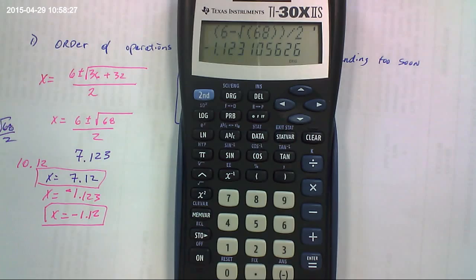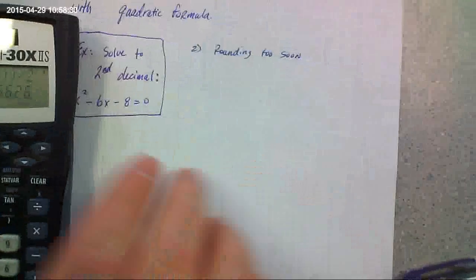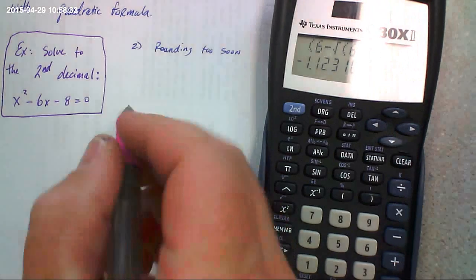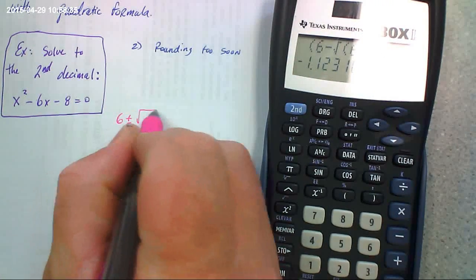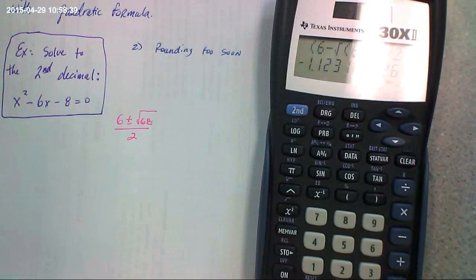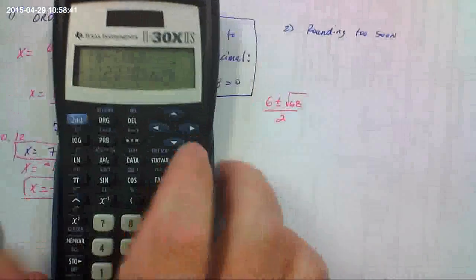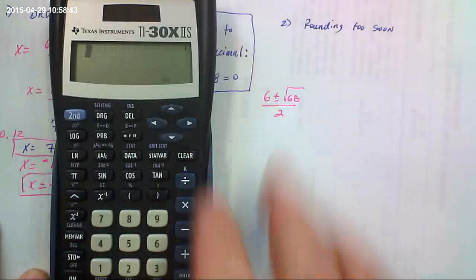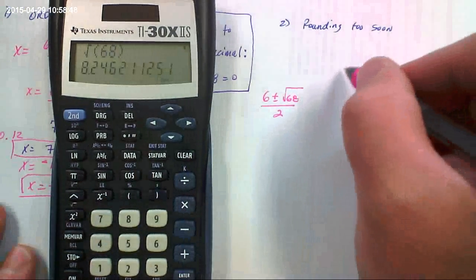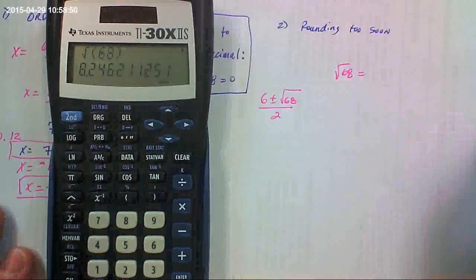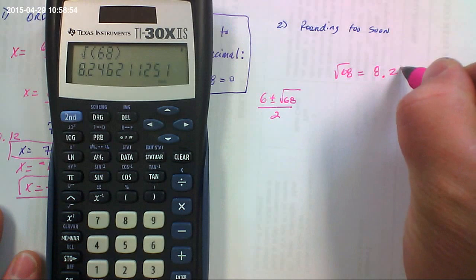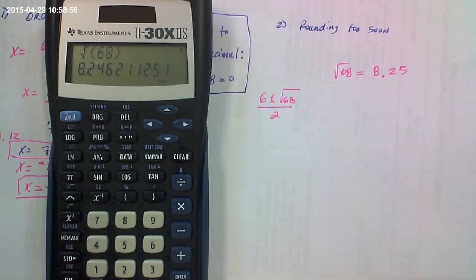Now the other common mistake people make is in rounding too soon. So we had 6 plus or minus the square root of 68 divided by 2. What a lot of people do is they'll often say that the square root of 68, oh well, that's 8.246. So that'd be 8.25.